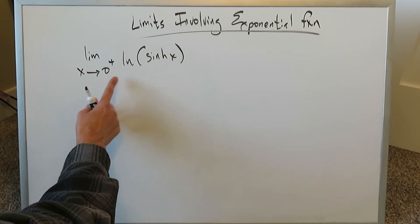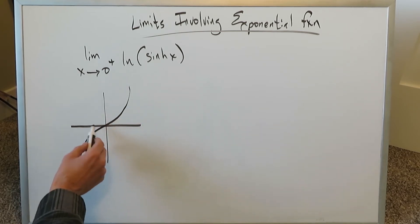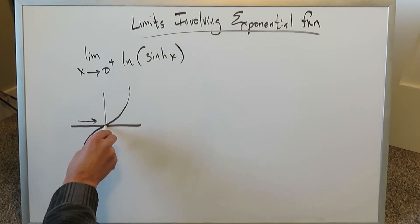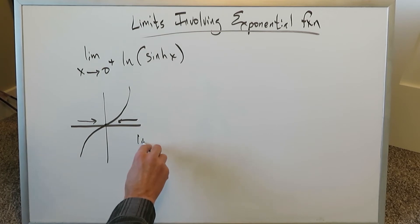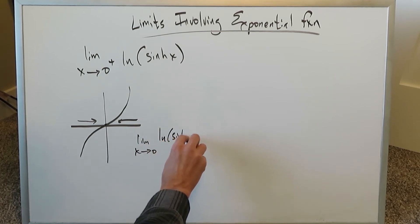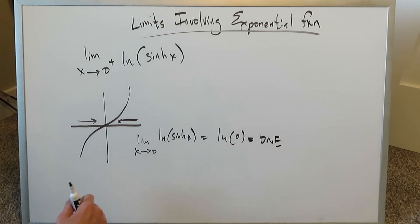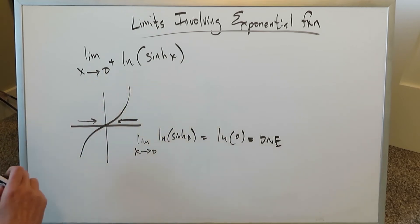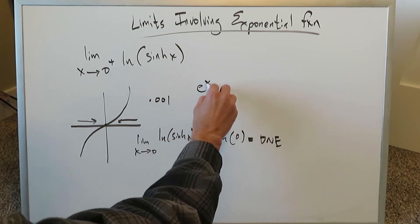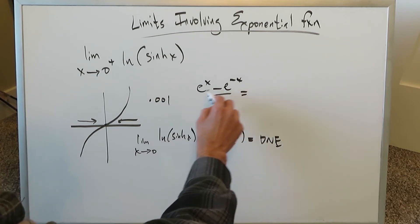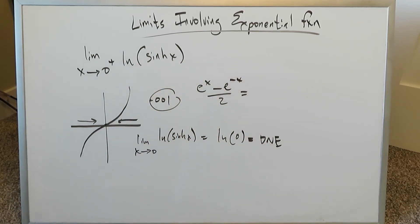Let's look at this question: limit as x approaches 0 from the right of ln(sinh(x)). Hyperbolic sine looks like — when approaching sinh(x) from either side near 0, the function approaches 0. If the question were just limit as x approaches 0 of ln(sinh(x)), you'd be looking at ln(0), which is undefined. But we're approaching from the right, so a good test value is 0.001. The function sinh(x) is defined as (e to the x minus e to the minus x) over 2.